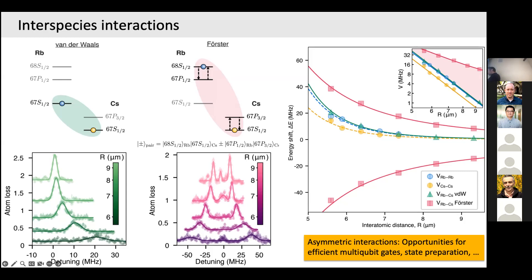A question about spot sizes: the tweezers are about a micrometer in size. Thinking of it as a harmonic potential, the atom explores different distances depending on its temperature. The separation between atoms can vary by a few hundred nanometers or even half a micrometer, which can cause disorder in the experiment depending on the exact interaction value.